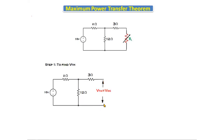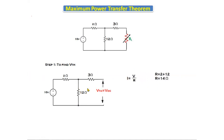In the second loop, the loop current is zero, making the 3-ohm resistor inactive. Therefore, whatever voltage appears across the 12-ohm resistor is the same as the open-circuit (Thevenin's) voltage, since there is no voltage drop across the 3-ohm resistor. To find the voltage across the 12-ohm resistor, we need the current using I equals V divided by R.